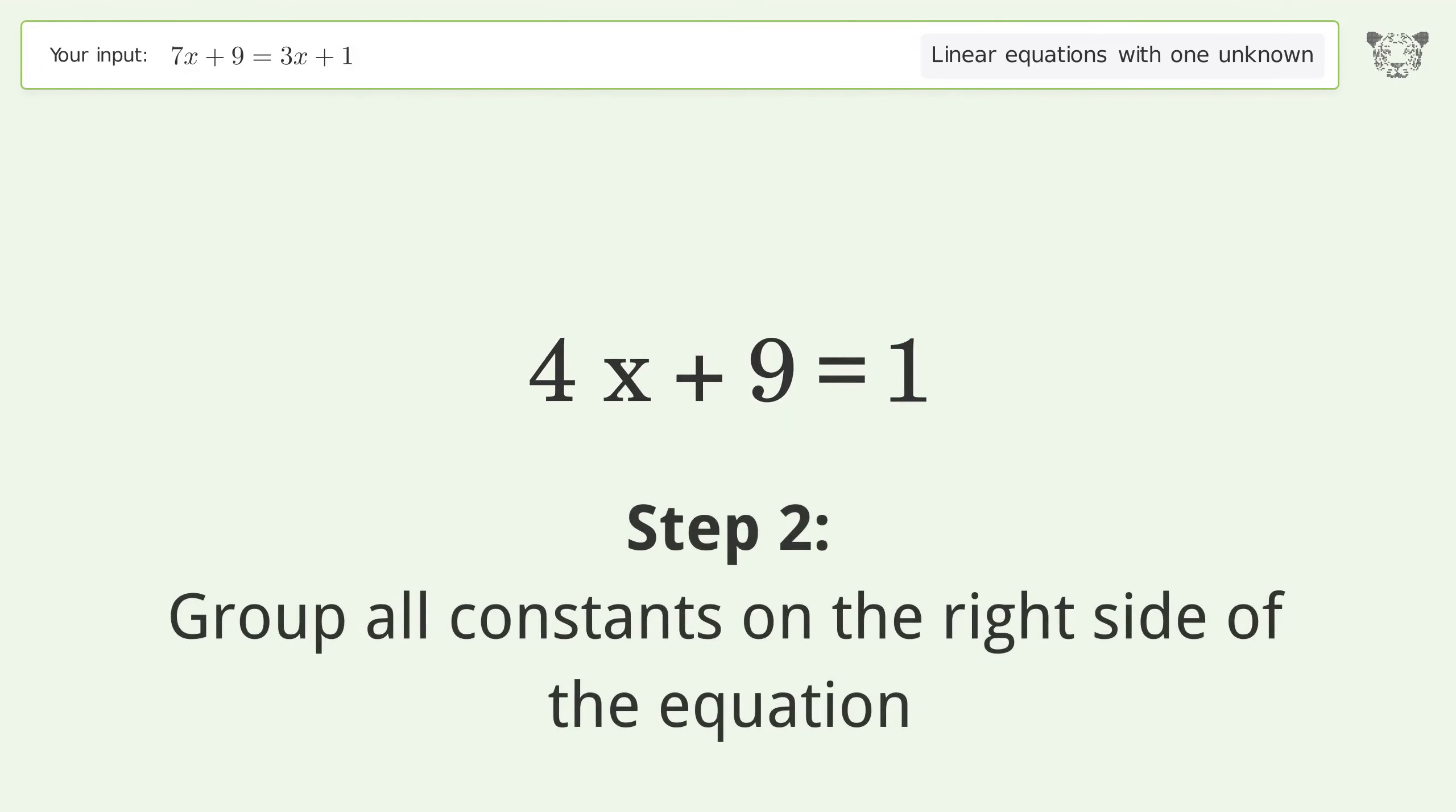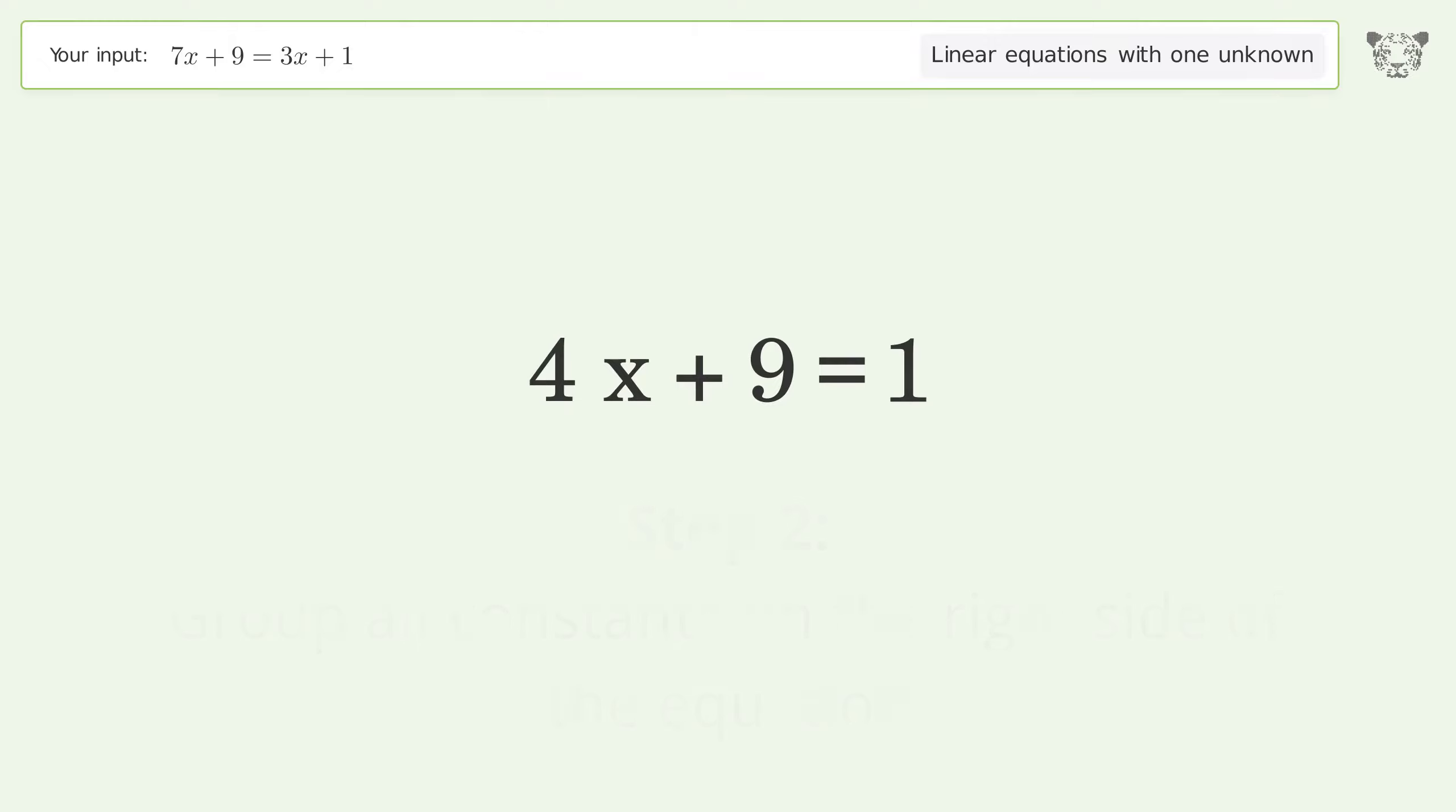Group all constants on the right side of the equation. Subtract 9 from both sides. Simplify the arithmetic.